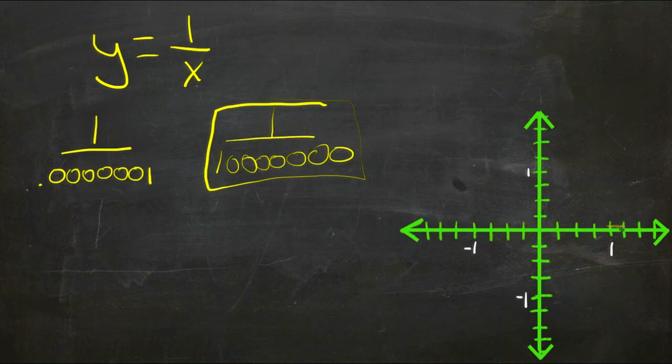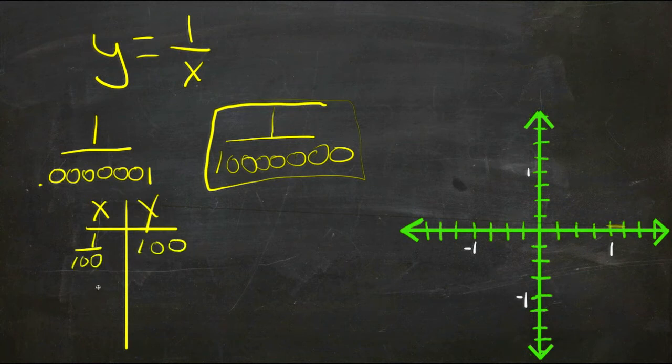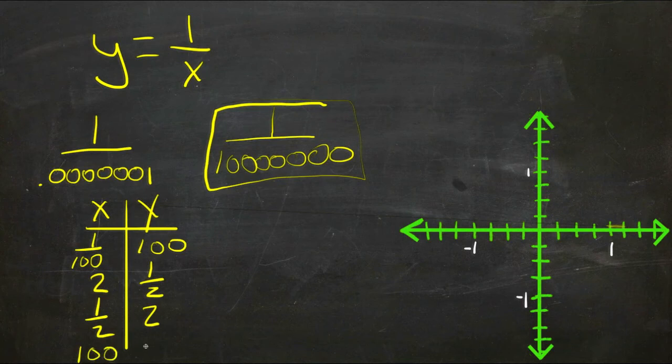So if we actually graph a few points here, let's draw a couple of lines for x and y. We already said if x is extremely tiny—let's say one one-hundredth—then y will be a hundred. If x is two, then y will be one-half. If x is one-half, y will be two. If x is something really big like a hundred, y will be one one-hundredth.